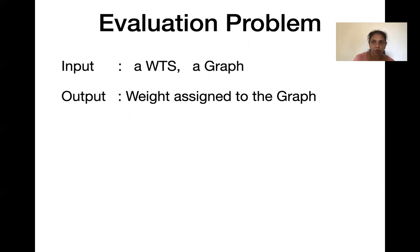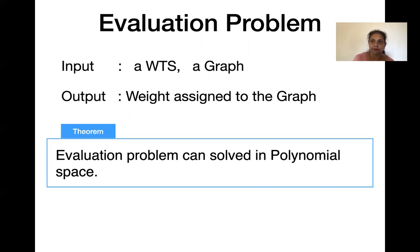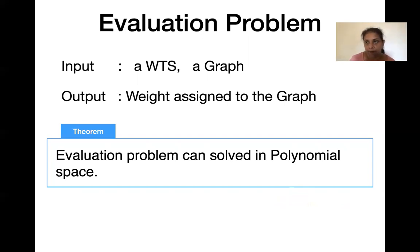This computational function problem can be solved in polynomial space. We store the weight computed so far in a temporary register, enumerate every possible coloring of the graph, compute each coloring's weight, and add it to the aggregate. This works in polynomial space regardless of which semiring we choose.